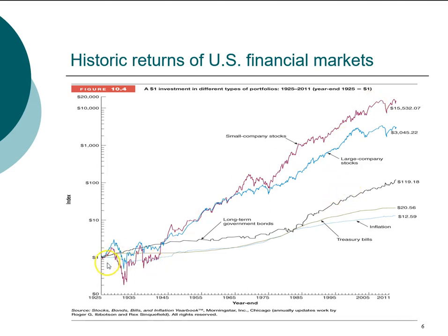This graph shows the increase in value. We also know that we can compute year-to-year return. So if we compute year-to-year return over this time period from 1925 to 2011, we have 86 years' worth of return. It's very hard to grasp 86 numbers all at once, so we need to find a way to summarize that information through summary statistics.